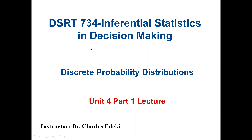Welcome to DSRT 734 class. In this lecture we are going to discuss discrete probability distributions. Our main objectives are to distinguish between discrete and continuous random variables, learn how to construct a discrete probability distribution and its graph, determine if a distribution is a probability distribution, and find the mean, variance, standard deviation, and expected value of a discrete probability distribution.